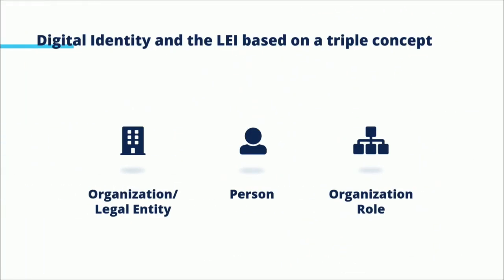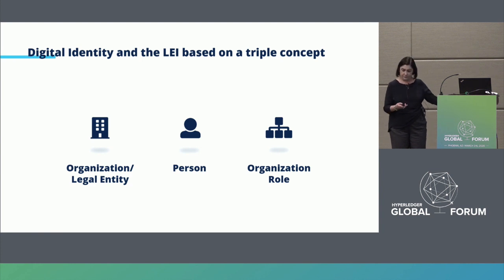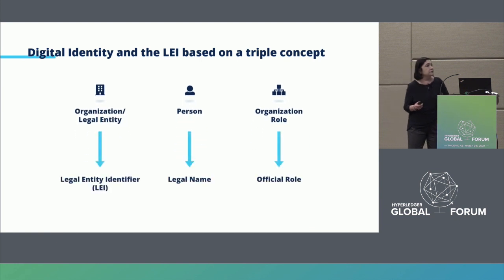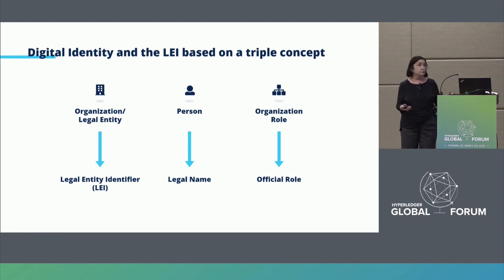Digital identity in the LEI is based on three concepts: you have an organization or legal entity; you have a person or persons associated with that entity; and within those organizations, those people have roles. We take this information and put it together in a standard way. The representation of the organization is the LEI itself, the person's legal name as part of the credential, and the official role they play.